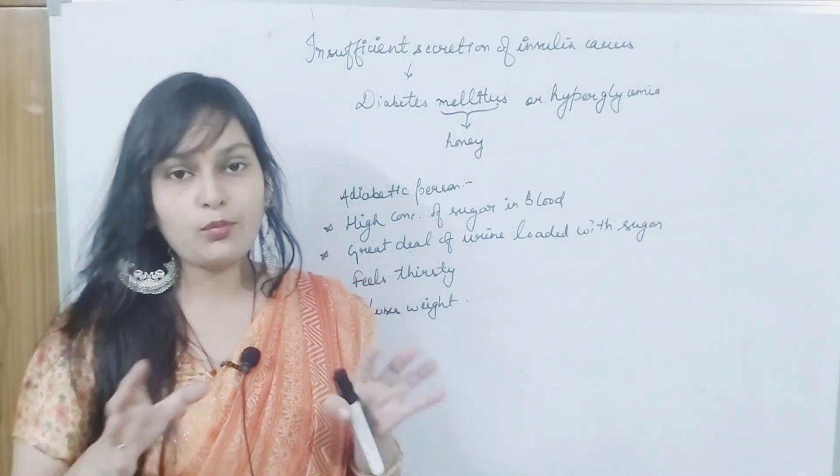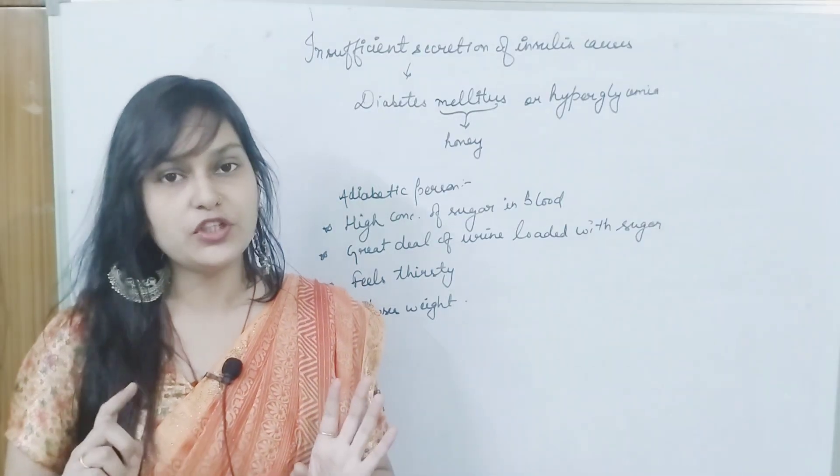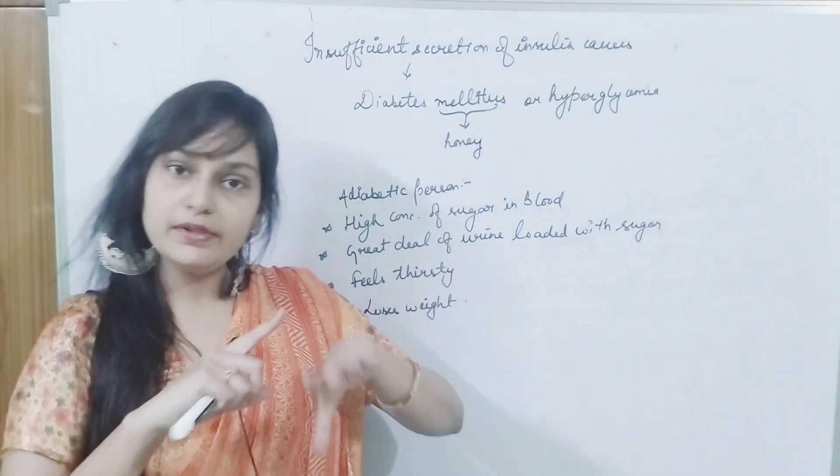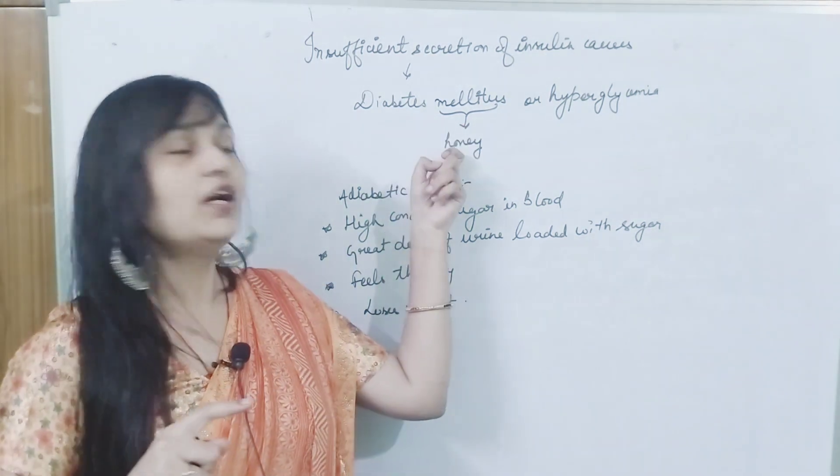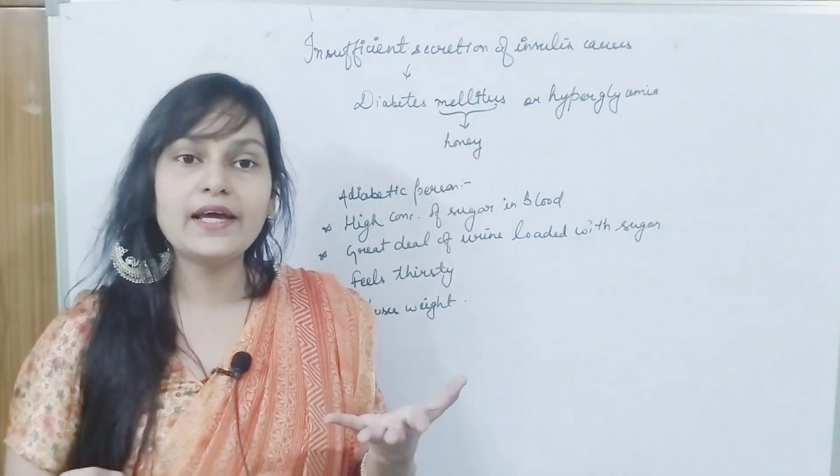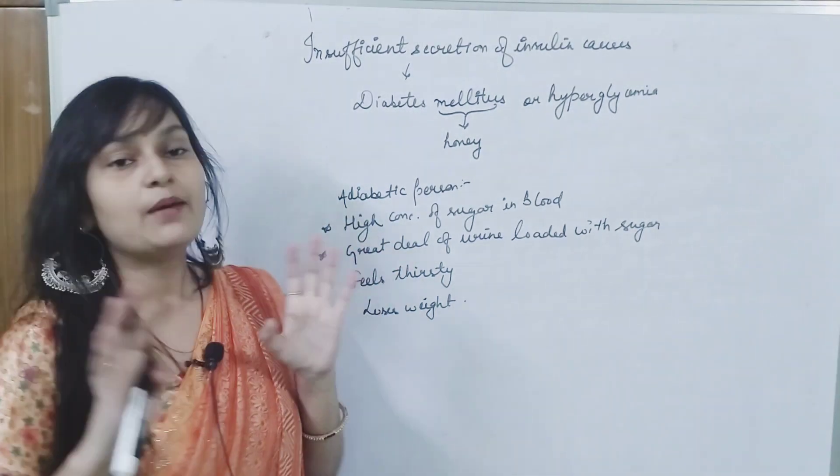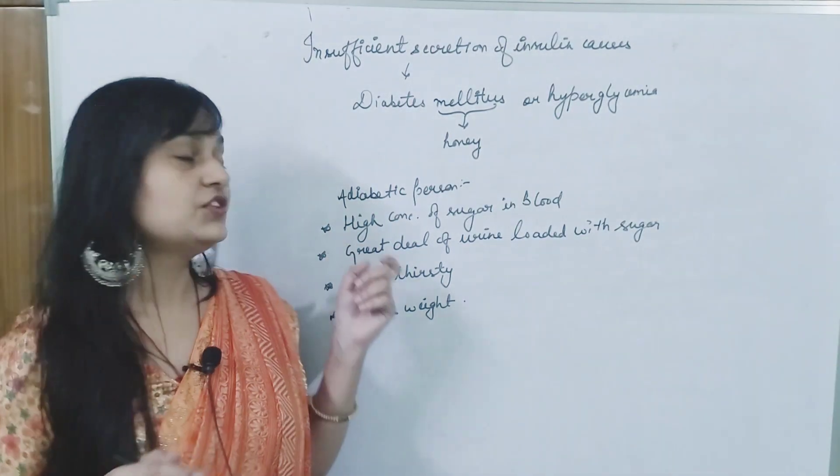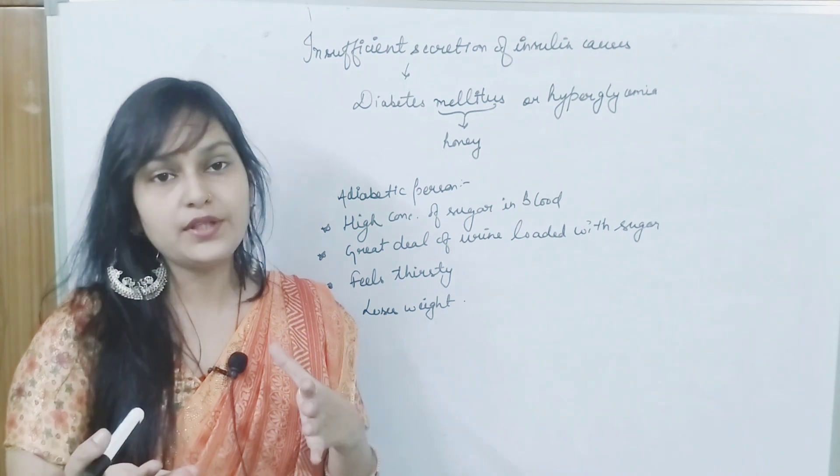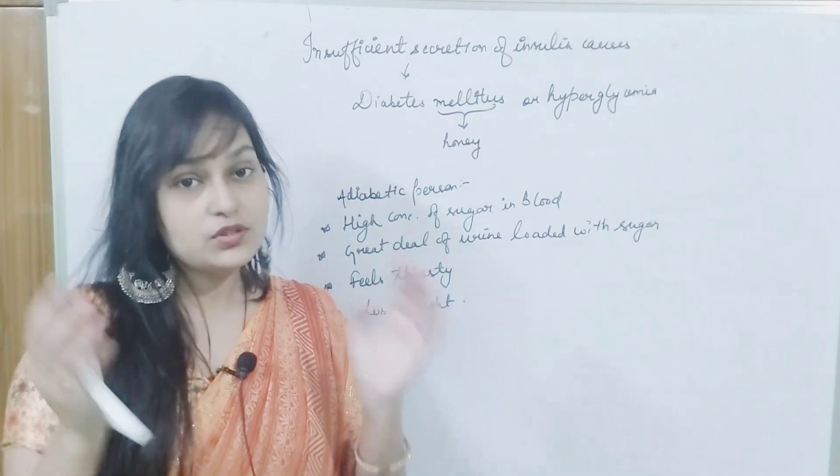If insulin is insufficient amount in the body, if it is insufficient, then what condition of the body will arise? Diabetes mellitus. Mellitus means honey. How is honey? It is sweet. That is why diabetes mellitus, because glucose is increased but insulin is not produced. What can you say? Hyperglycemia. Now let's check for diabetes.